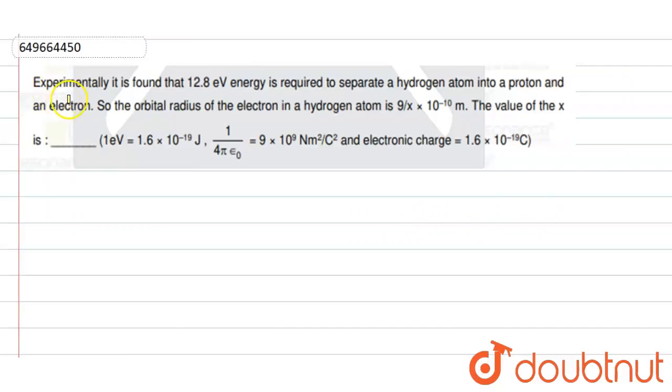Hello students, we are given a question here. Experimentally, it is found that 12.8 electron volt energy is required in order to separate a hydrogen atom into a proton and an electron.